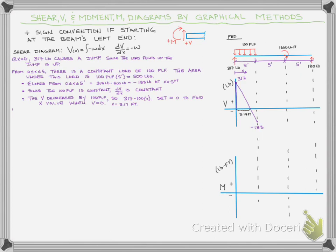Looking at the rest of the beam: as we move now from five feet toward the beam end, we don't have any additional applied forces that would affect our shear diagram. We have an applied moment, but it does not cause a jump on the shear diagram — it affected our support reactions, and so its effect is included there.